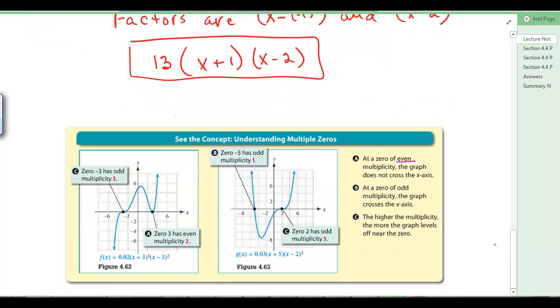One last concept. Over here, this 0 of negative 3 has a multiplicity of 3. It goes through the x-axis. This 0 of 3 has a multiplicity of 2. It's odd here. It crosses the x-axis. It's even here, it touched and went on. This 0 of negative 5 has an odd multiplicity of 1. This one has an odd multiplicity of 3. So, to make some conclusions, if the even multiplicity, the graph does not cross the x-axis. Odd multiplicity, the graph crosses the x-axis. The higher the multiplicity, the more the graph levels off near the 0.